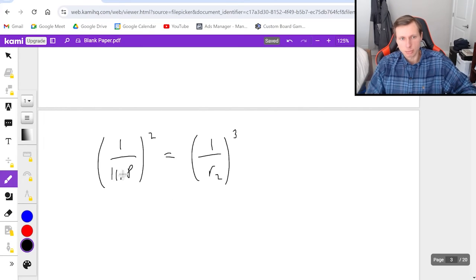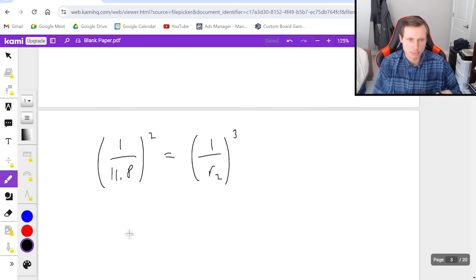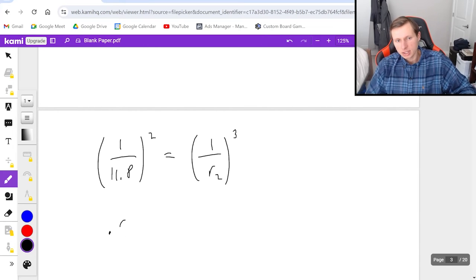So the first thing I should do is I should square the left side, which I can just plug that in a calculator, and I'll get 0.00718, and that's enough decimals for me. For the right side, I'm going to get 1 over r2 cubed.